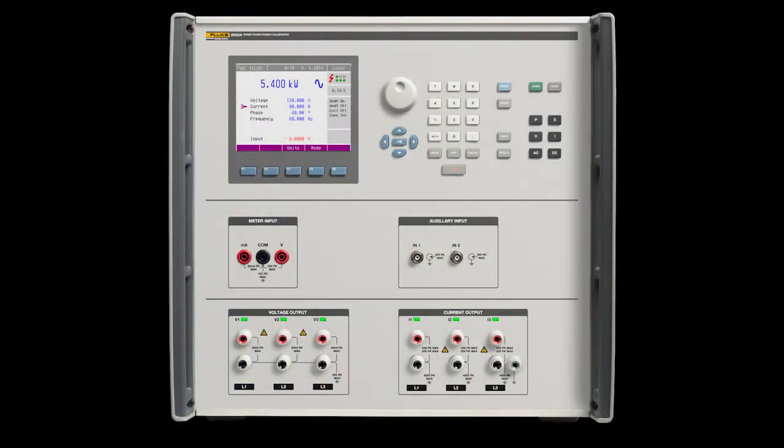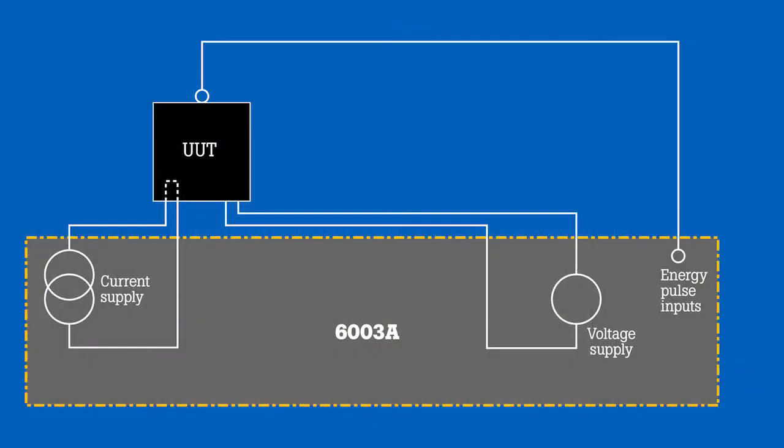The answer is the Fluke Calibration 6003A three-phase power calibrator. The 6003A was designed specifically for testing energy meters and it makes calibrating and testing them simple. It combines all three necessary pieces of equipment into one simple, easy-to-use calibrator.